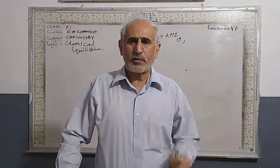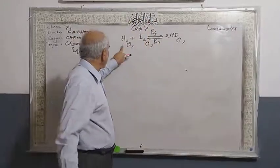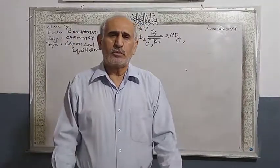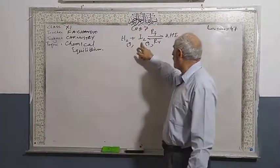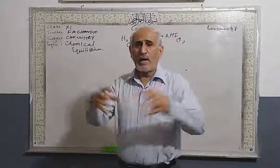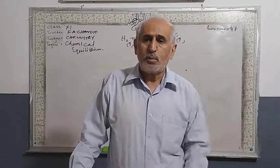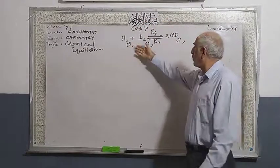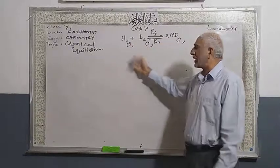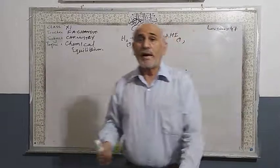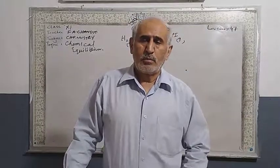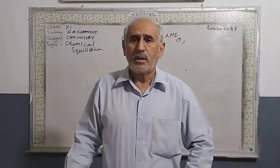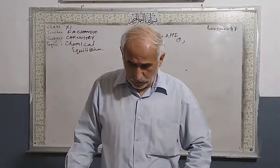At equilibrium state, we get a mixture of hydrogen, iodine, and hydrogen iodide. One mole of hydrogen, one mole of iodine, and two moles of hydrogen iodide are present in the equilibrium mixture. Both rates are equal but the reaction does not stop — the rate of forward equals the rate of reverse. This continuous motion at equal rates is called dynamic motion, and therefore the state of equilibrium is called dynamic equilibrium.